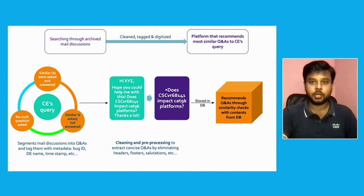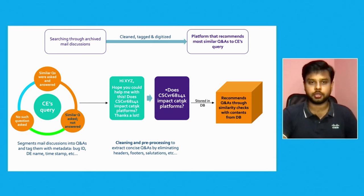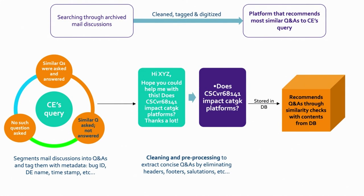The system then searches the database for similar previously asked questions and shows them. If the question was asked but unanswered, it notes this and Skybridge automatically triggers an email to the developer team. If it's a completely new question, a new email is also triggered automatically. To recap: archived email data is cleaned, tagged with proper question-and-answer pairs, and stored in the database, with unwanted data removed.